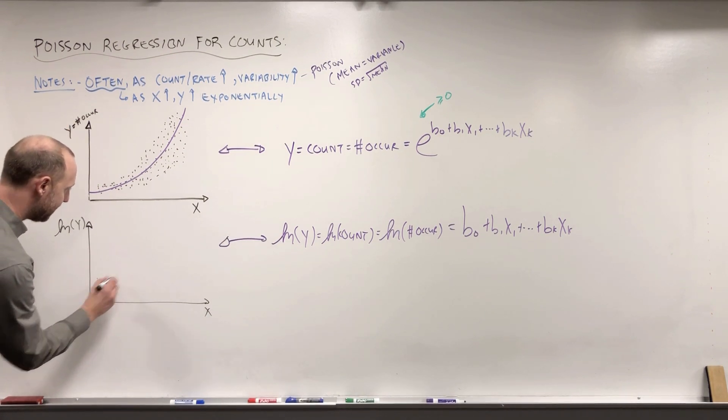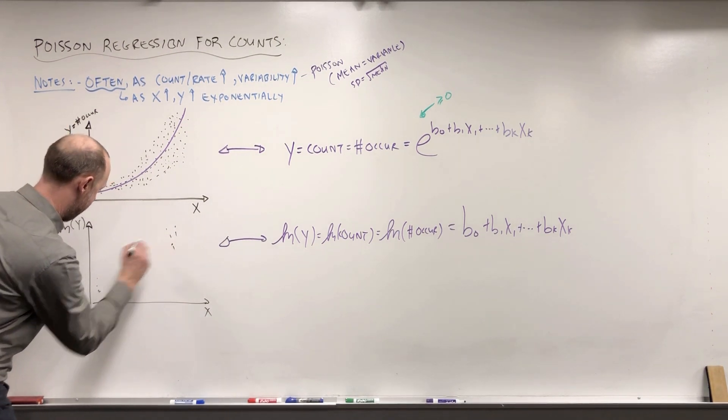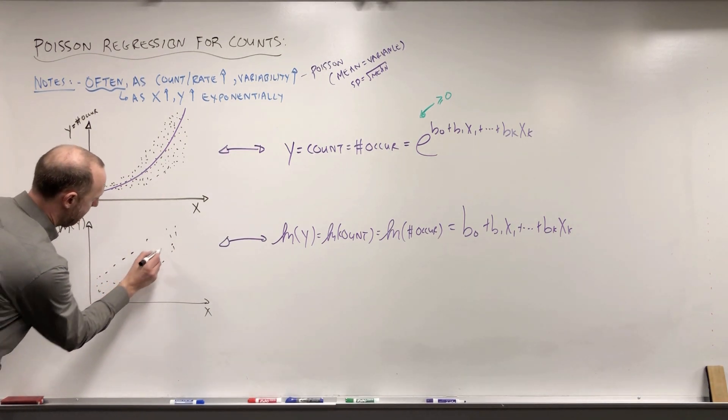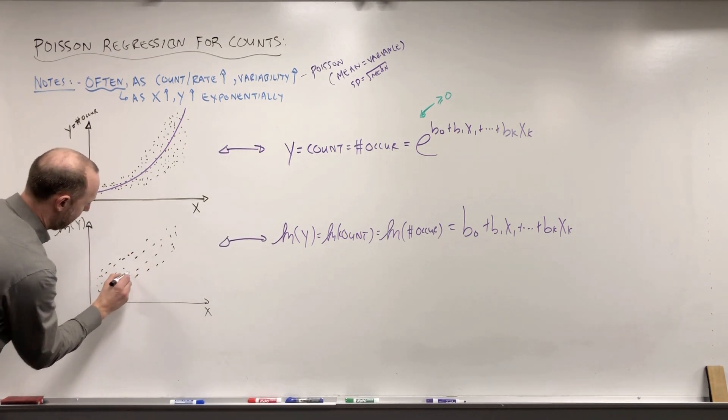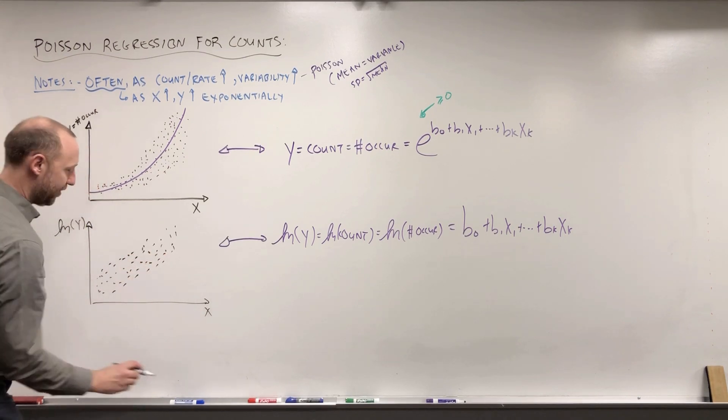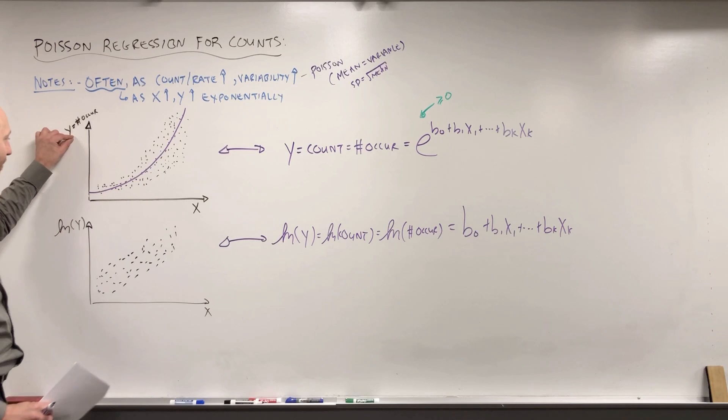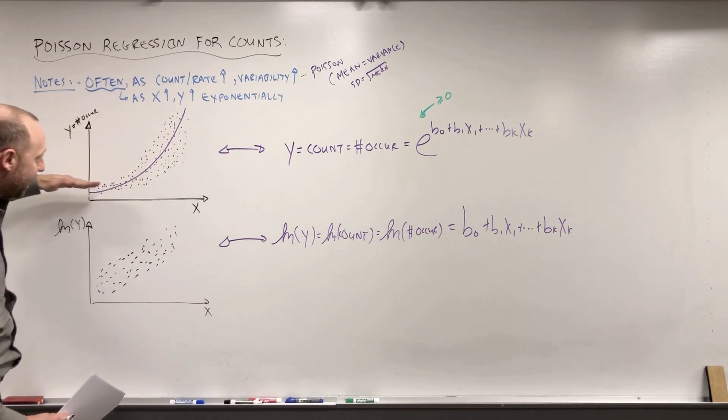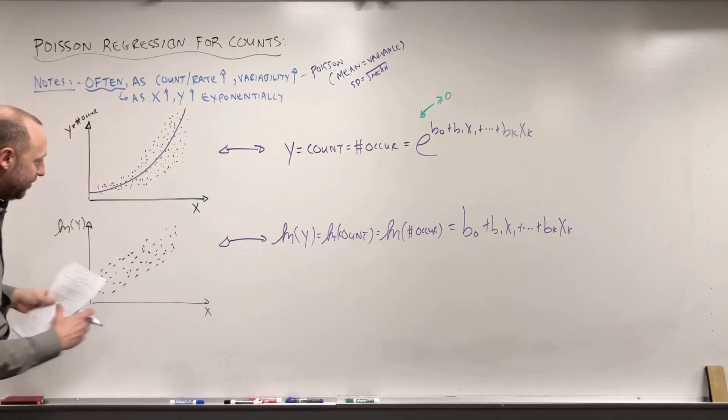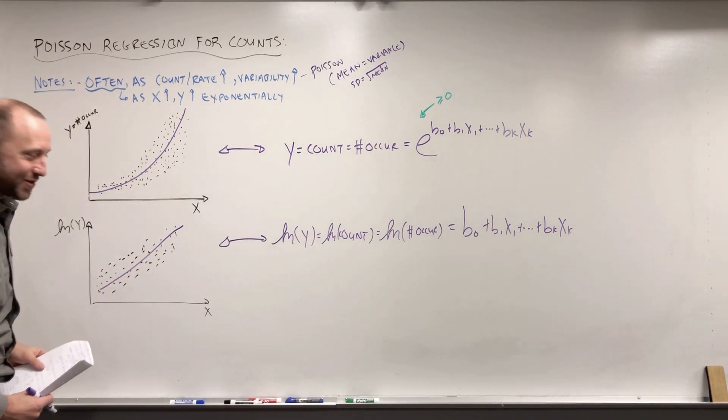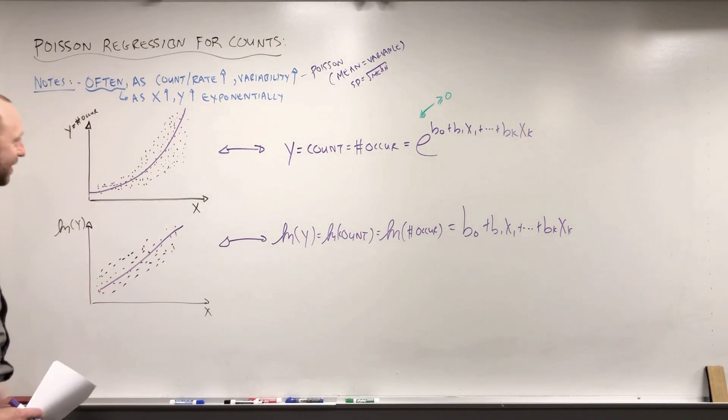So what this is essentially going to do is transform the data to look a lot more like this. So where we're taking the log of y, first it's going to take, if this is exponential, it's going to become, that's not the straightest line, but it's going to become a straight line on the scale of log y.